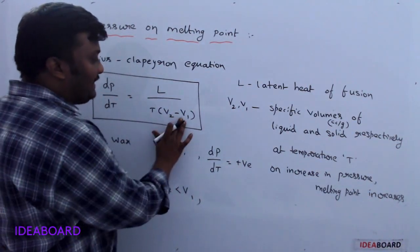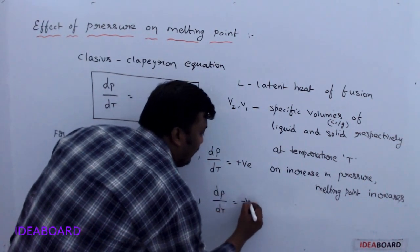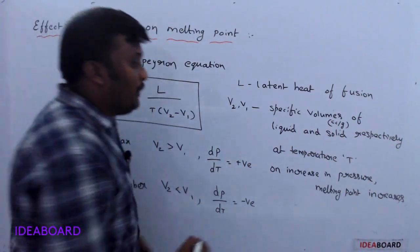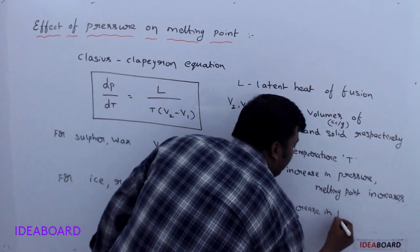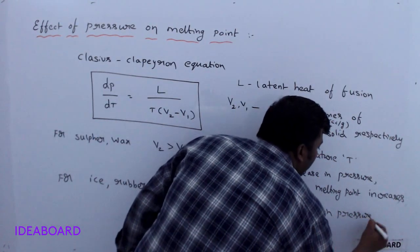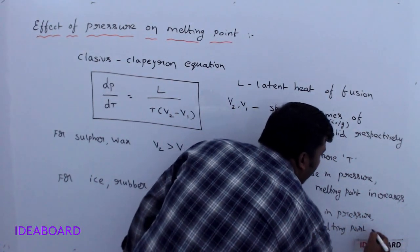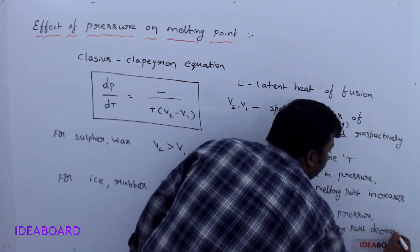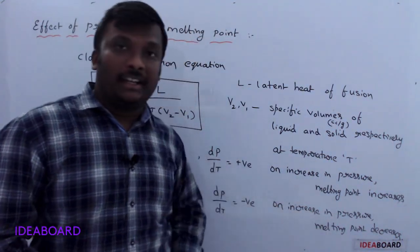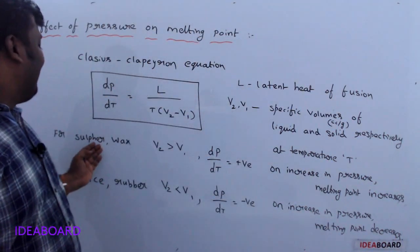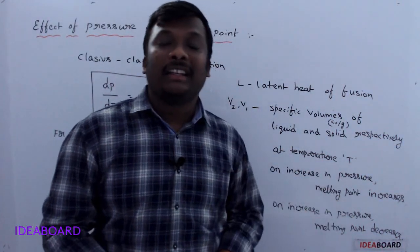If V2 is less than V1, this term becomes negative. So dP/dT is negative, which means on increase in pressure, the melting point decreases. So for ice and rubber, on increasing pressure, melting point decreases. For materials like sulfur and wax, on rising pressure, melting point increases.